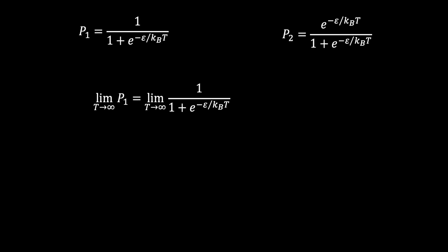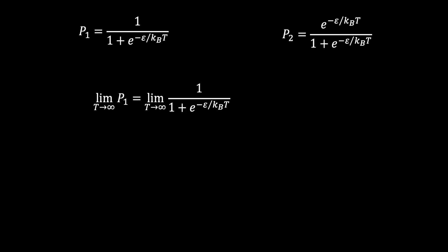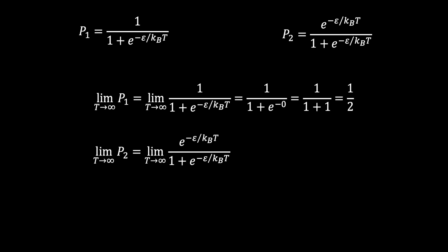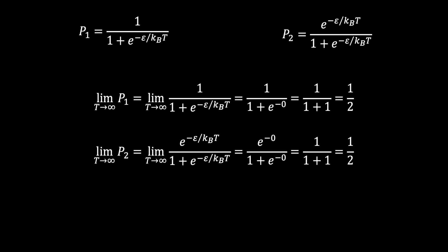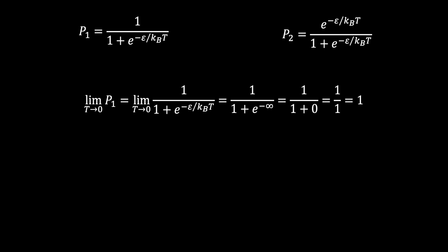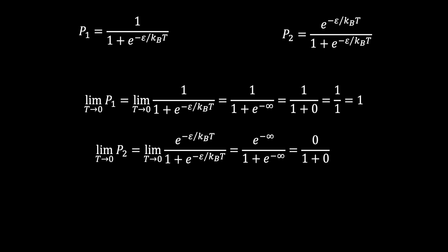What happens if temperature goes to infinity? The term representing the excited state will have an exponent approaching zero, so it becomes e raised to zero, which is 1. This means the probability of being in the excited state is one-half, and the probability of being in the ground state is also one-half — they are equal. If we allow temperature to approach zero, the exponent for the excited state becomes negative infinity, and that term approaches zero. Thus, there is no probability of being in the excited state, and the system must be in the ground state.